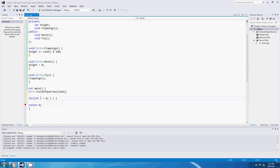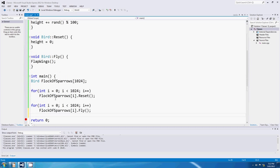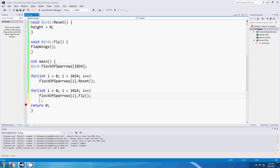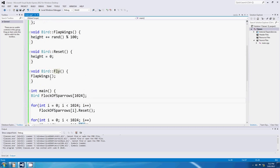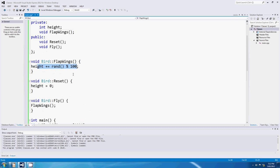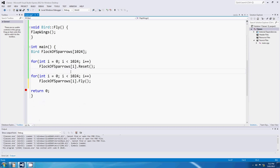So we could do for int i equals zero, while i is less than 1024, i++. I'll just copy this. Flock of sparrows i.reset. Okay, so that little for loop just there is going to call reset on every single one of the birds, one after another. Then we can do for int i equals zero, while i is less than 1024, i++. Flock of sparrows i.fly. Okay, now this is going to be excellent. I think, anyway. This is going to ask every single one of those 1024 sparrows to fly. But you know the interesting thing is that every single one of those sparrows will flap its wings and choose its own height. So we don't know what they are going to be.